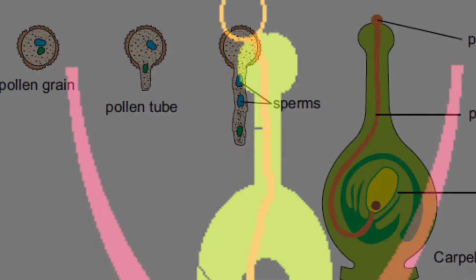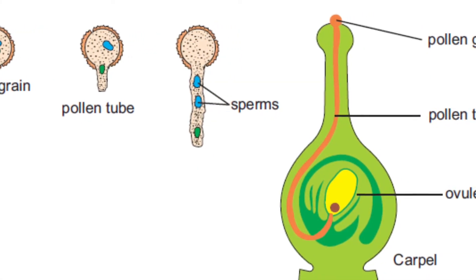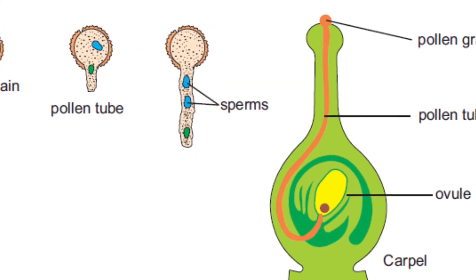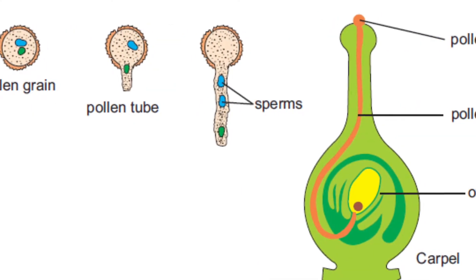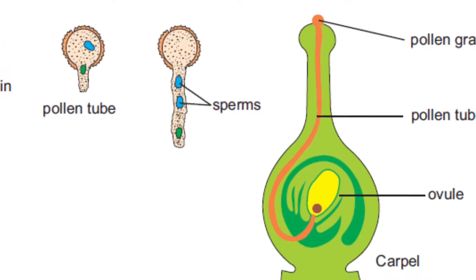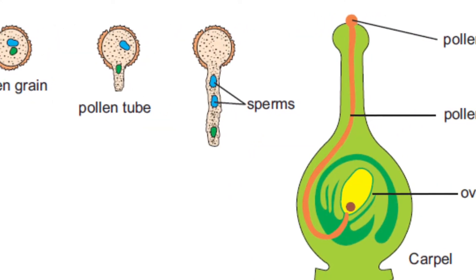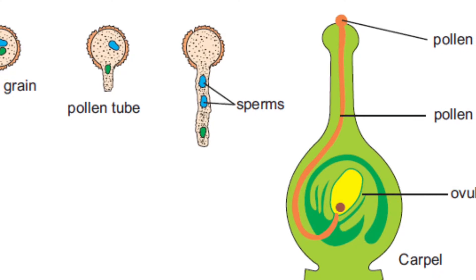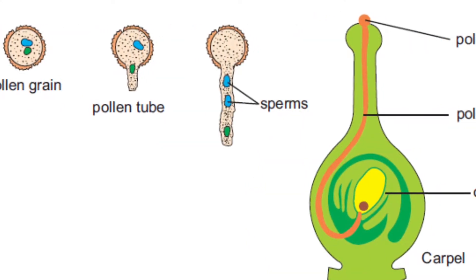In plants, of course, we know that the male sex cell is contained in the pollen and the female parts are in the ovule. During sexual reproduction in plants, when the pollen lands on the sticky stigma, it then grows a tube all the way down to the ovule, and the male gamete is passed down that tube and fertilizes the egg in the ovule.